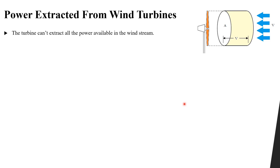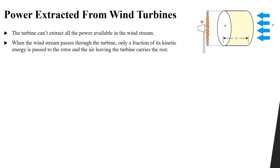First you have to understand that our wind turbine cannot take all of the power in the wind stream. The wind has kinetic energy and passes through the wind turbine, so some of this kinetic energy will be transferred to the turbine and the rest will go away with another velocity. If our wind turbine extracted all of the wind power, the air molecules would be standing still.